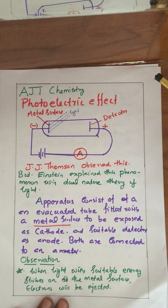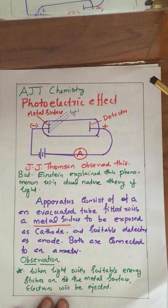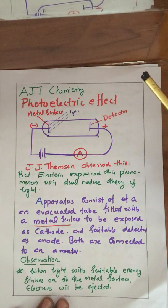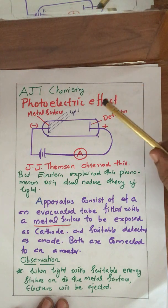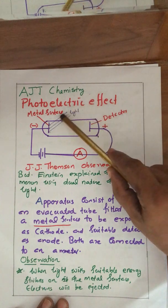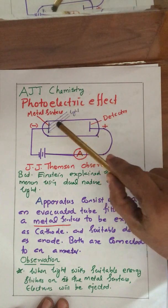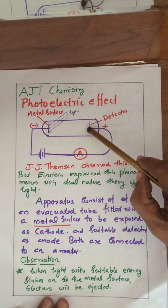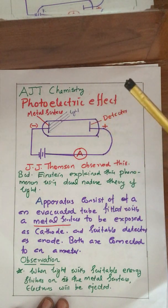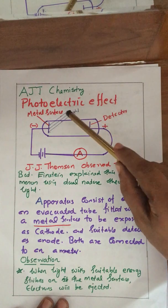According to wave theory, there are two important points. One is that light has a wave nature. Number two is that the energy of light is proportional to the intensity of light. If you consider these two points, you cannot explain the photoelectric effect — it could not be explained by wave theory.